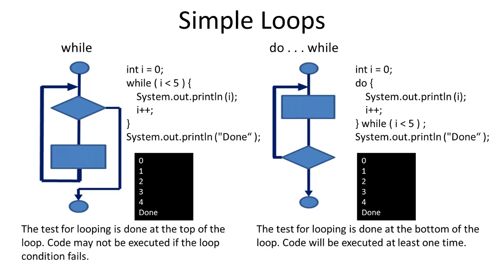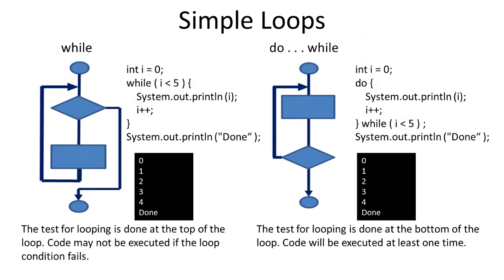One more thing to look at in these examples is that i starts at 0 and the loop continues as long as i is less than 5. There are 5 passes through the loop starting at 0.